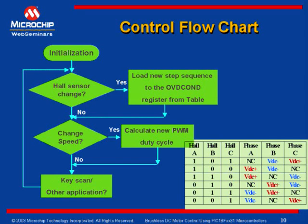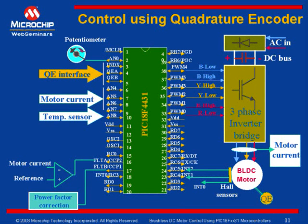So, till now we have seen controlling a brushless DC motor using Hall effect sensors. Next, let us see how we can control a brushless DC motor in closed loop using quadrature encoders and using a motion feedback module to interface a quadrature encoder input. This slide shows how a quadrature encoder can be interfaced with the PIC-18FXX31. A quadrature encoder is mounted on the BLDC motor shaft, and the signals A, B, and INDEX are interfaced to the motion feedback module here.